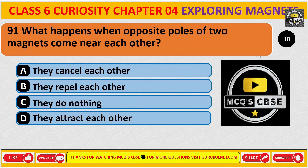What happens when opposite poles of two magnets come near each other? The correct answer is D. They attract each other.